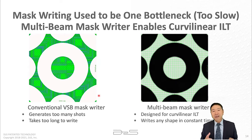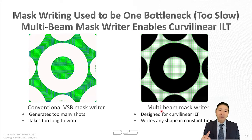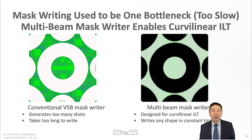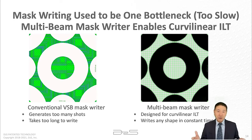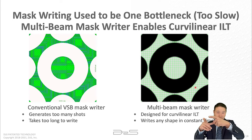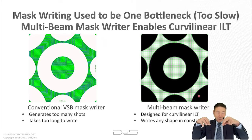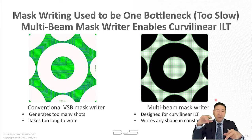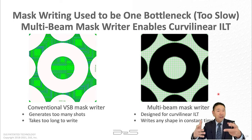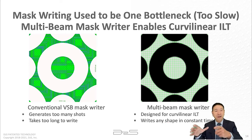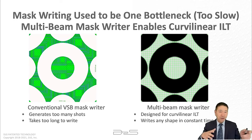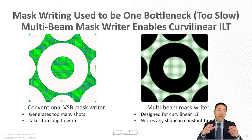Fortunately, the photomask industry recognized this challenge, and both IMS and NuFlare started developing multi-beam mask writers. In the multi-beam mask writer, the head can write about 260,000 beams simultaneously, turning each beam on and off and varying exposure time to write pixels even in grayscale. Write time is constant regardless of pattern type, and the entire mask can be written in roughly 12 to 24 hours. This solves the bottleneck of mask writing for curvilinear mask patterns.